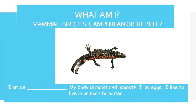This animal is a salamander. My body is moist and smooth. I lay eggs and I like to live in or near water. The clues are: the body is moist and smooth, it lays eggs, and it likes to live in or near water. So this animal is an amphibian because it has a moist body and likes to live in or near water.